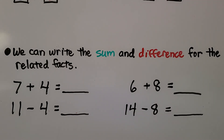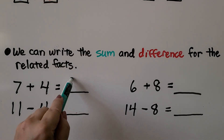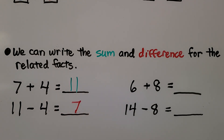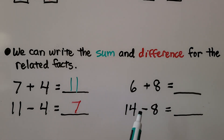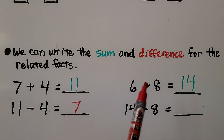We can write the sum and difference for related facts. We have the same numbers: a 4, a 7, and our subtraction starts with an 11, so the sum must be 11. Using the same three numbers for the related fact, the missing difference would be 7. We're using 4, 7, and 11. Here we've got a 6 and an 8. For the related subtraction fact, our minuend is 14, so that sum must be 14. The number missing from this related fact is 6 — the difference must be 6.